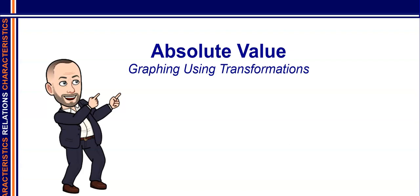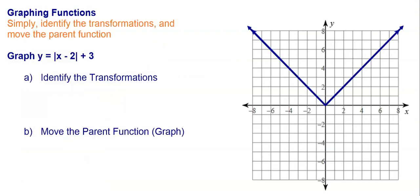Welcome back. Before we continue with absolute value, I just want to take a minute to go over how to graph absolute value using the transformational approach. For instance, I have y equals absolute value of x minus 2 plus 3, and I want to graph that without using Desmos. I want to do it by hand and without plotting points.